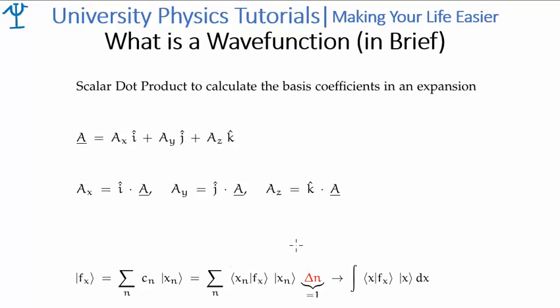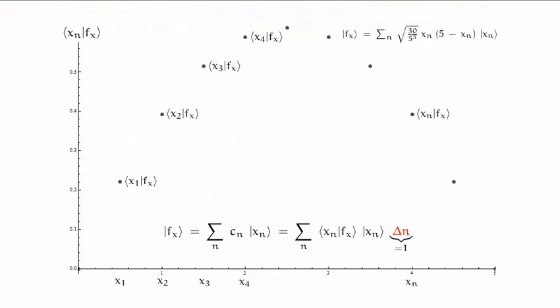This, of course, is where the basis states are discrete. And if the basis states become continuous, then we get this representation of our vector. And we know that this quantity here is known as the wave function.